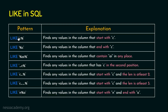LIKE 'c%' means we find any values in the column that start with 'c'. LIKE '%c' means we find any values in the column that end with 'c'. LIKE '%ai%' means we find any values in the column that contain the pattern 'ai' in any position — whether at the start, middle, or end.